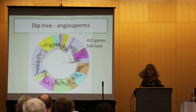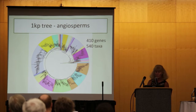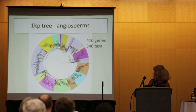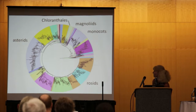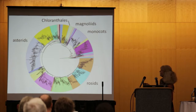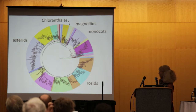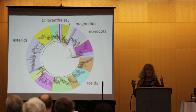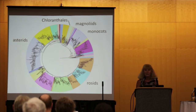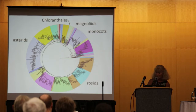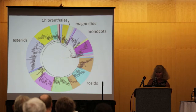Here's a slightly larger version of that tree with a few of the major clades noted: monocots, magnolians, chloranthales, the Asterids, and the rosids. We'll be dissecting this tree to investigate some of the relationships that I just posed questions about.